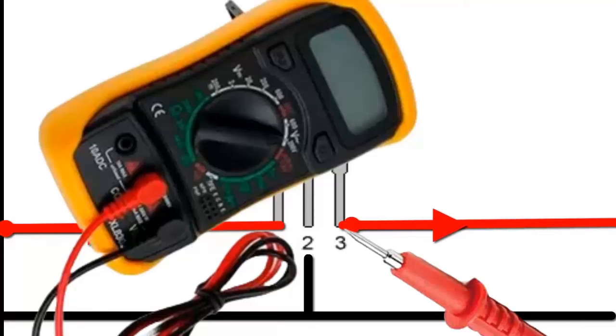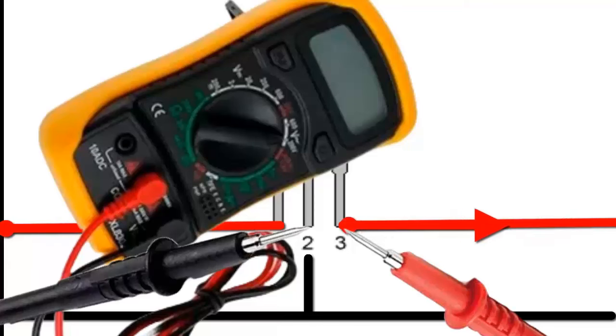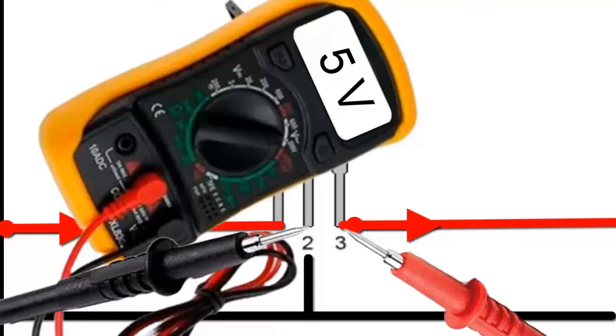With a multimeter, place the positive probe on pin 3 or the regulator's output. Place the negative probe on pin 2 or ground.